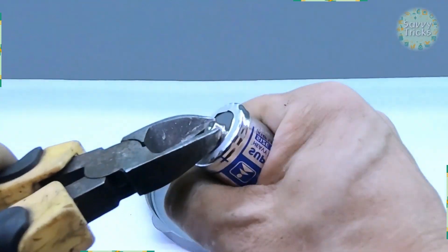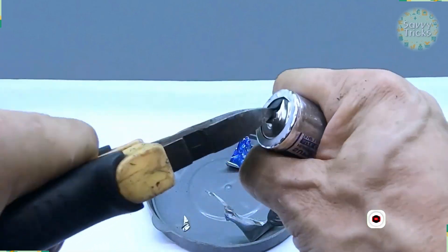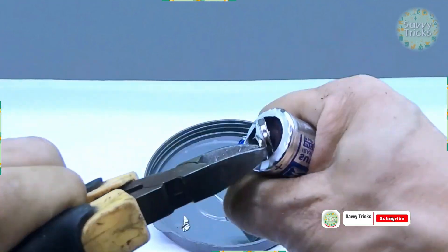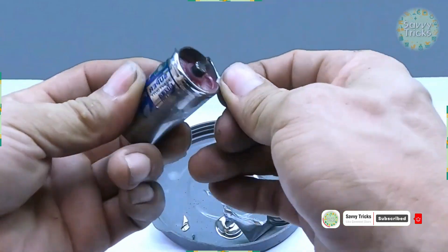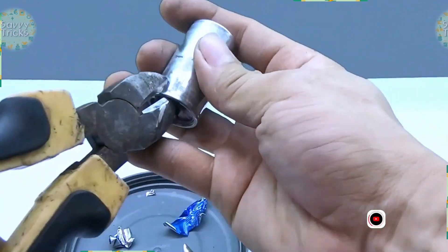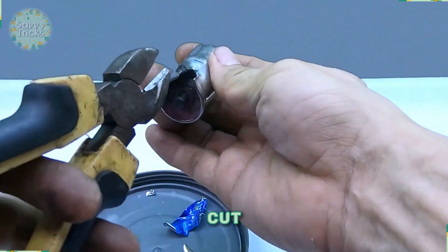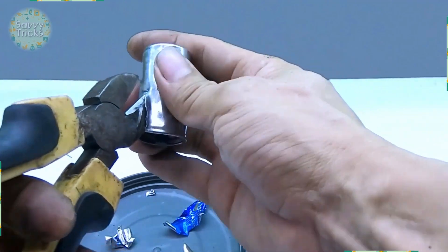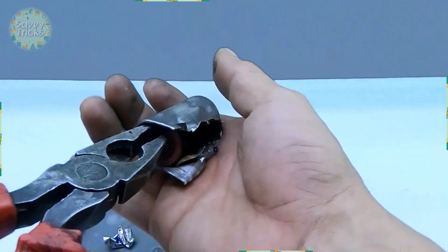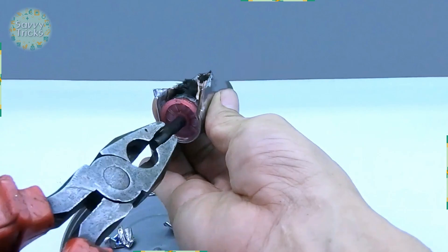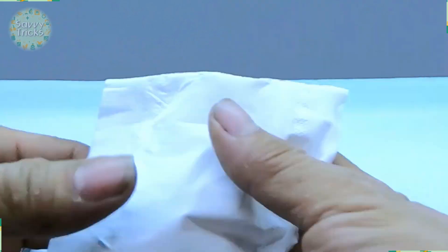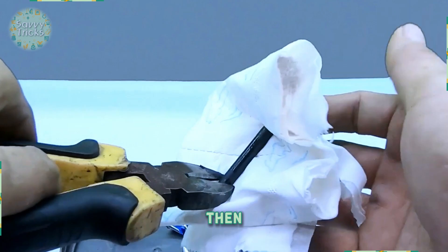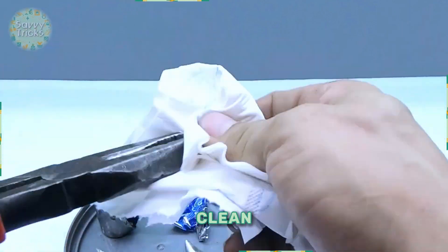Now take a cutter plier and cut the metal coating. Then take tissue paper and clean the lead thoroughly.